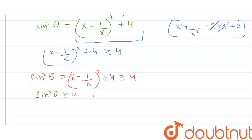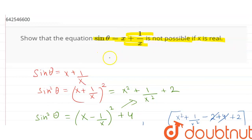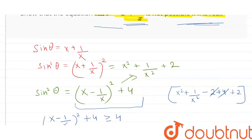And this thing is actually not possible because the value of sine square theta oscillates between positive 1 and negative 1. So we have proved that this solution sin θ = x + 1/x is not possible if x is real, and this is the required proof.